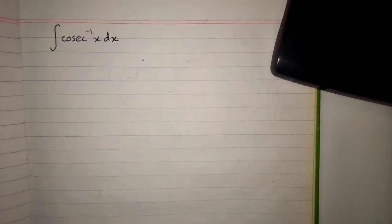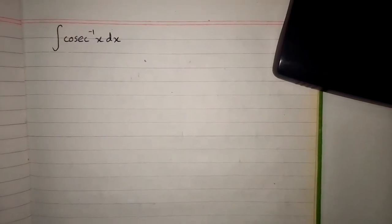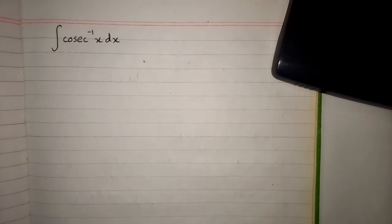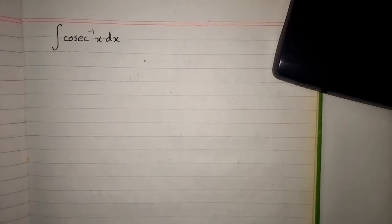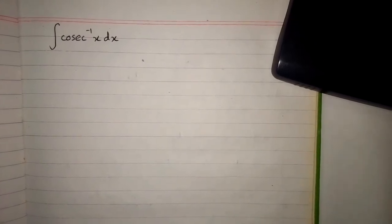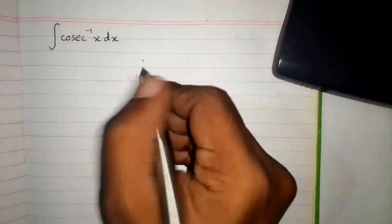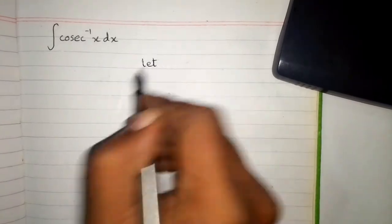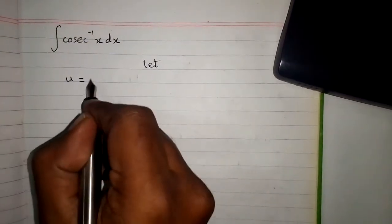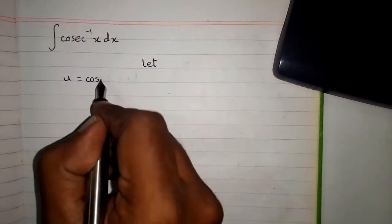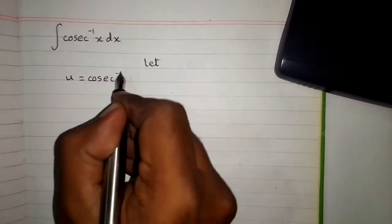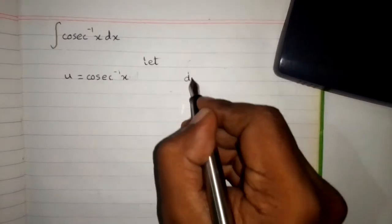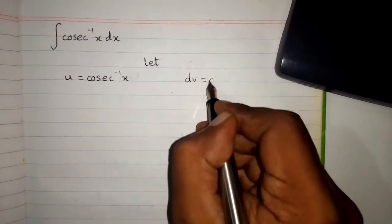In this video we are going to integrate arcsecant inverse x. In order to integrate this function we will use integration by parts. First, let u equal to arcsecant inverse x and dv equal to dx.